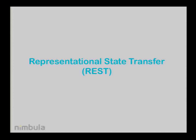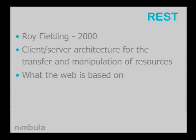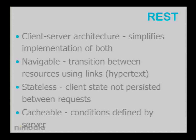REST — representational state transfer — which you probably heard about a couple years ago when it was very big on the internet. This came out of Roy Fielding's doctoral paper in 2000. He was trying to design an architecture for the web, or at least formalize the architecture he saw coming out of the web. The architecture he went for was a way to transfer and manipulate representations of resources, and the best web applications are probably built on this sort of concept. It's a client-service architecture which simplifies the implementation of both — neither one has to maintain the state of the other. It's a navigable architecture, which means transitioning between resources is done using links. On the internet it's hypertext, HTML — you follow a link from one resource to another.